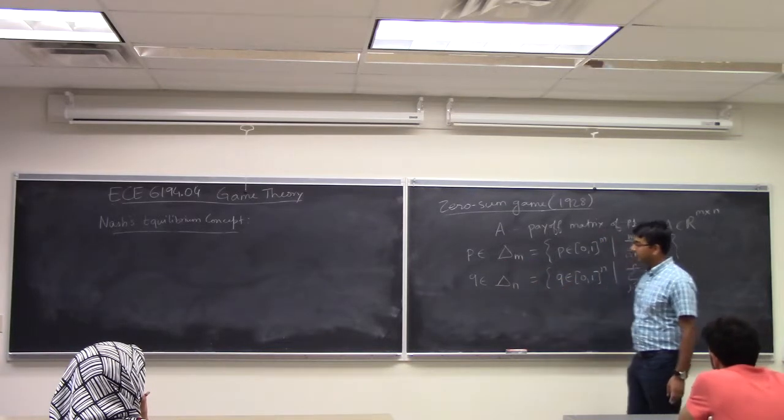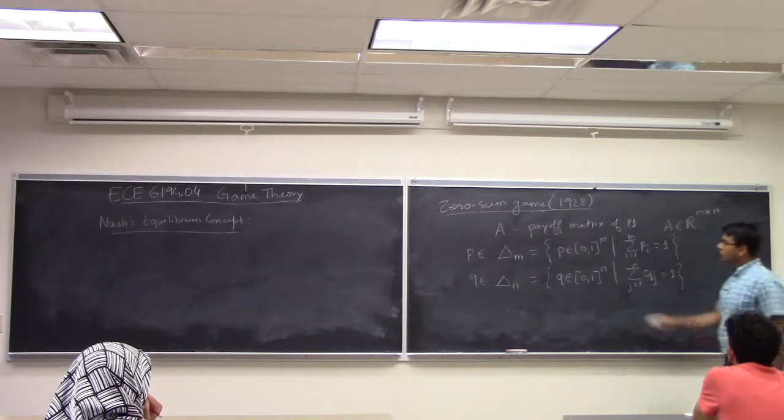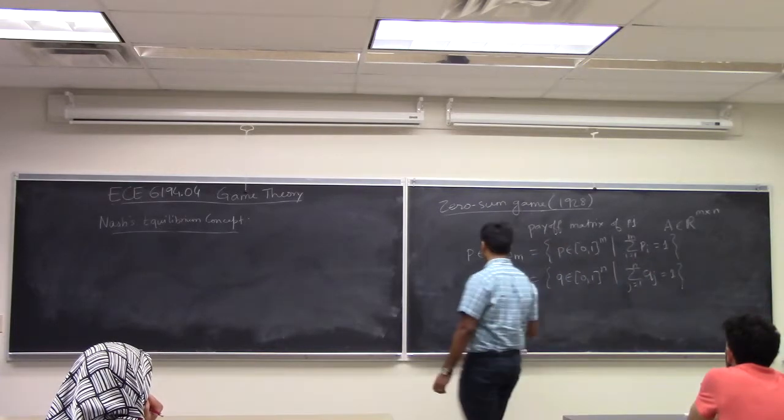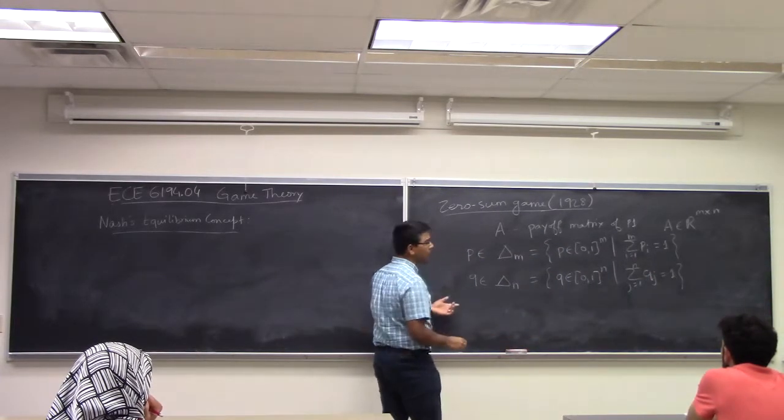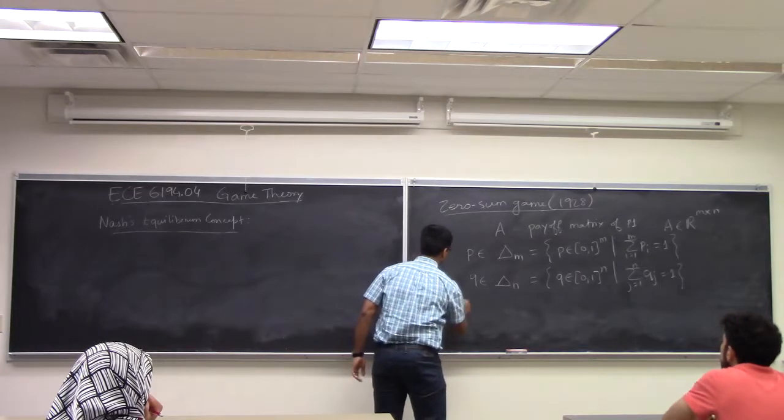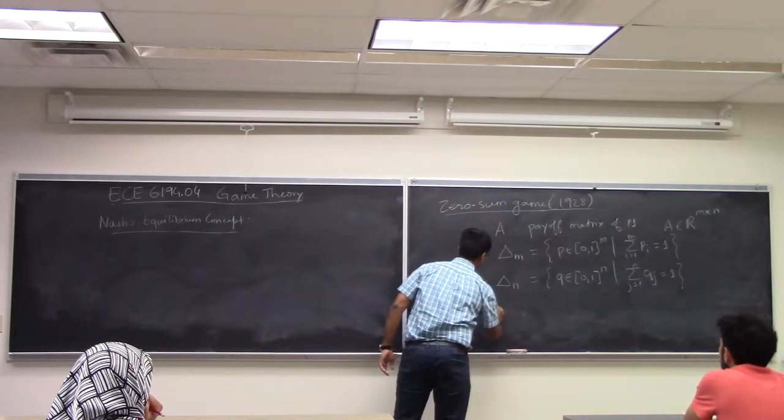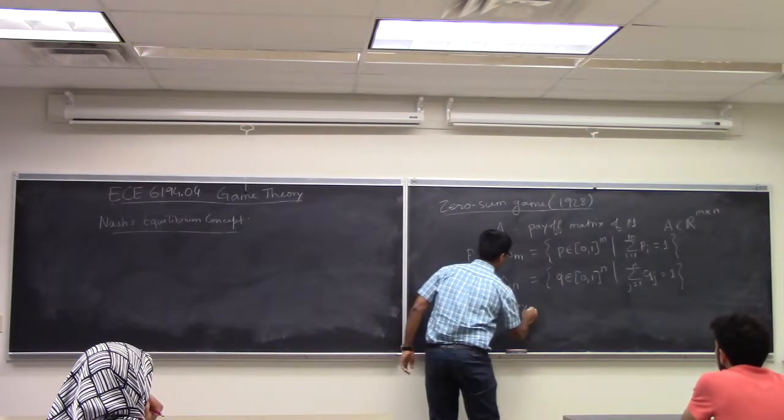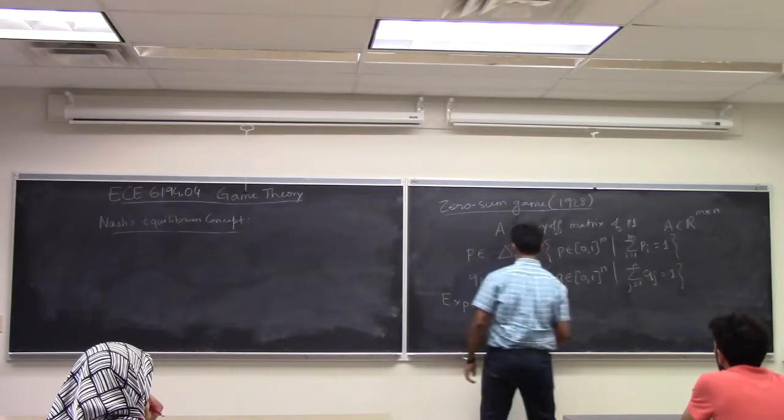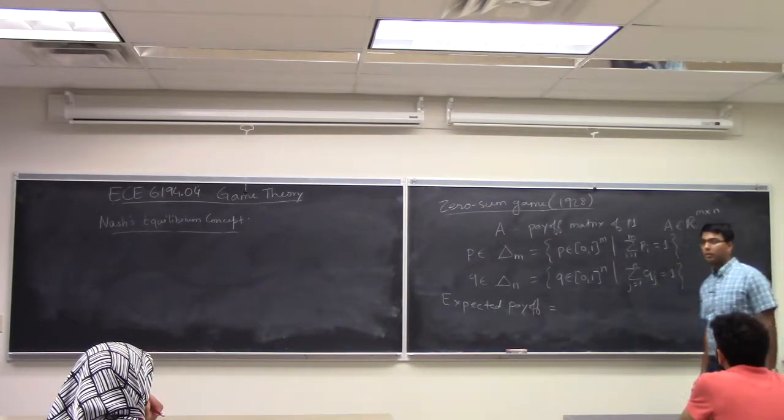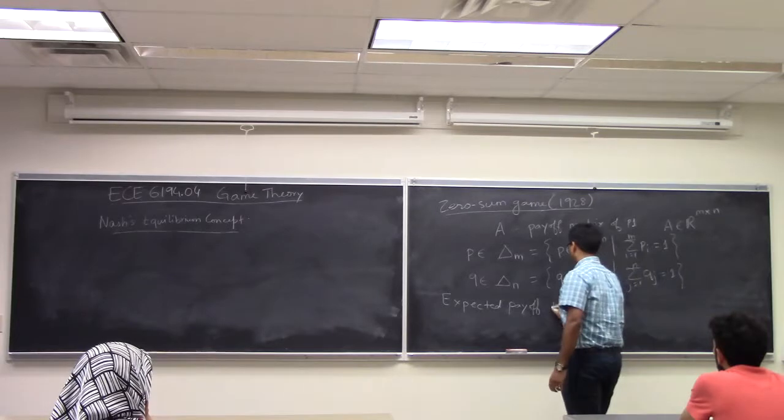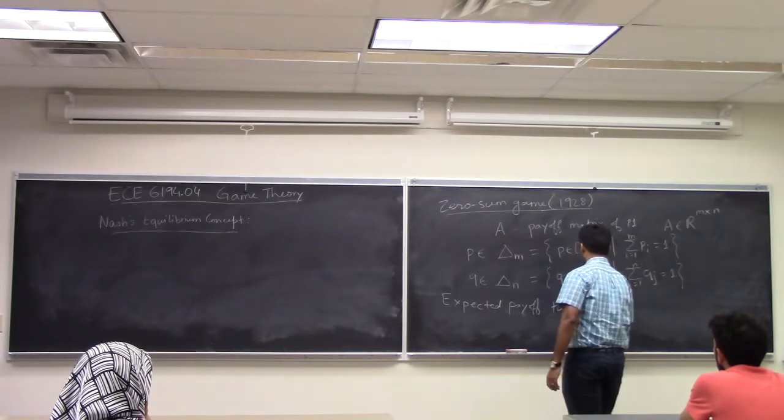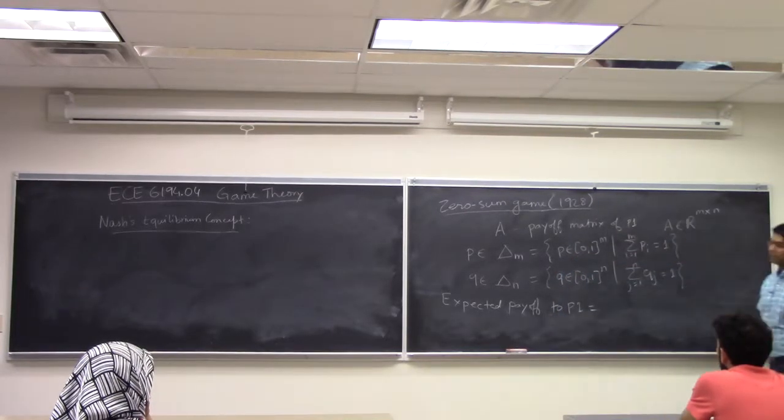So player 1 picks a mixed action P, player 2 picks a mixed action Q. So what is the payoff to player 1, what is the expected payoff to player 1? Any thoughts?